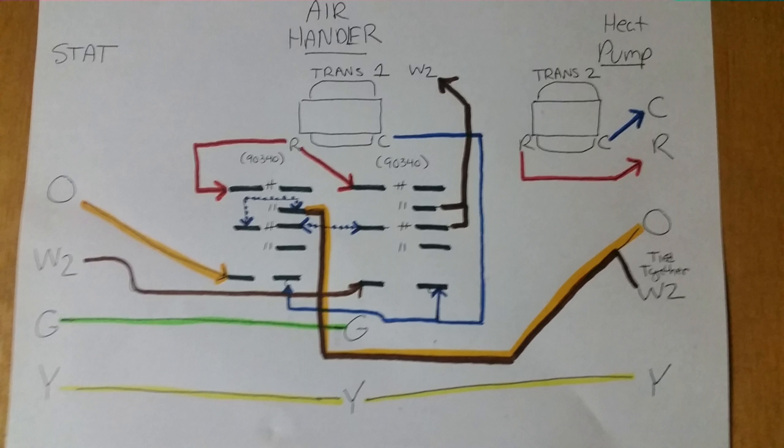Now, your commons for the indoor transformer and outdoor transformer should be grounded. Sometimes the machines do ground them, sometimes they don't. So I'd like you to ground both the commons. That way there's a baseline between the two transformers so that the wires will communicate well with each other.